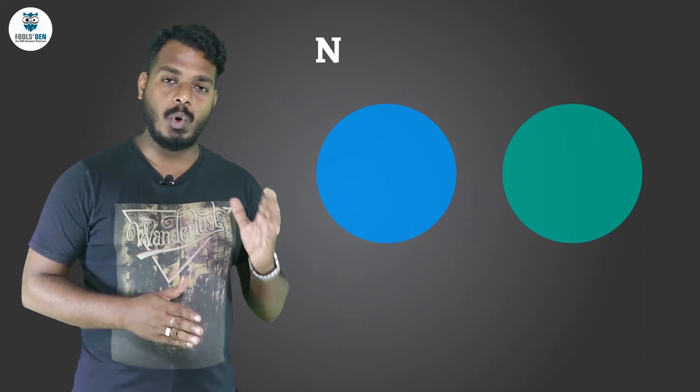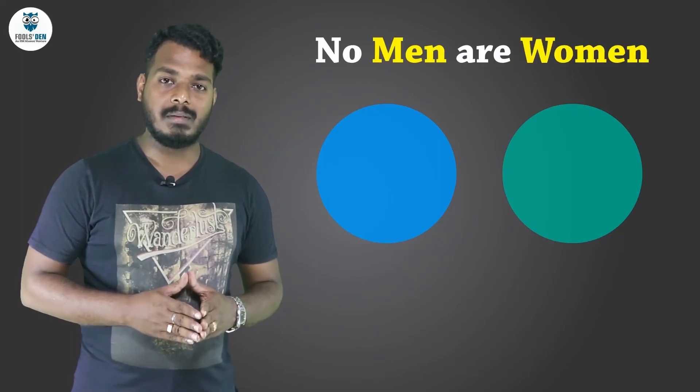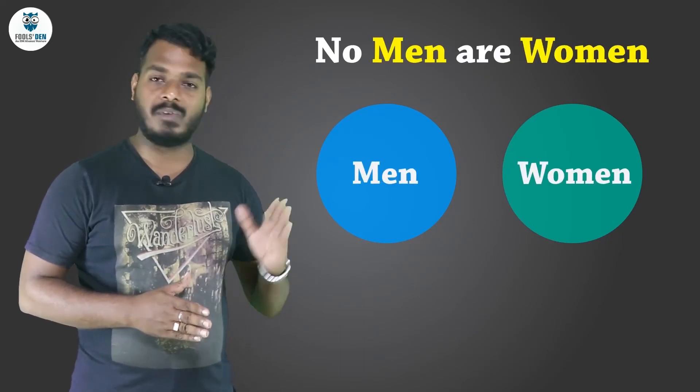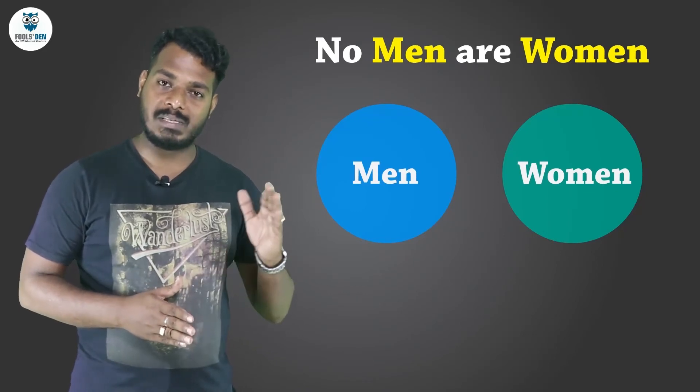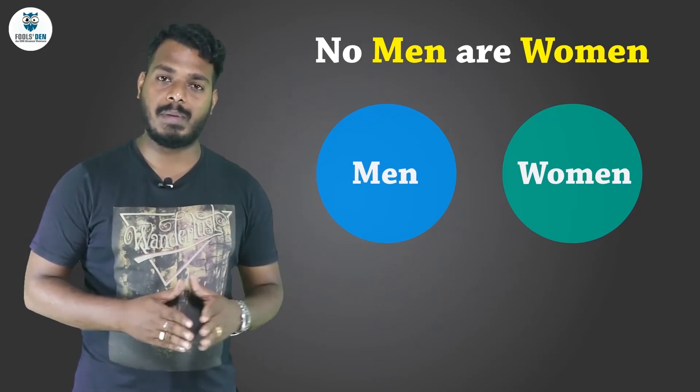We can take another example. Say if I say no men are women, this can be represented by two different circles which have no common area, because obviously men are different from women.